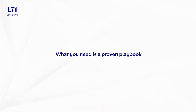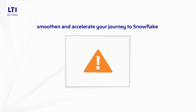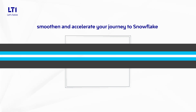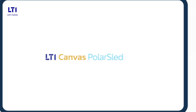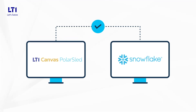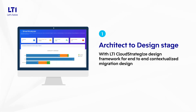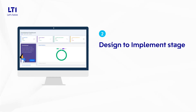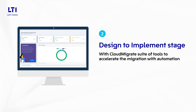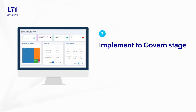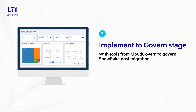What you need is a proven playbook to de-risk, smoothen, and accelerate your journey to Snowflake. LTI Polar Sled can help you launch your Snowflake modernization initiative. It's a three-stage plan: the Architect to Design stage with LTI Cloud Strategize design framework for end-to-end contextualized migration design; the Design to Implement stage with Cloud Migrate suite of tools to accelerate migration with automation; and the Implement to Govern stage with tools from Cloud Govern to govern Snowflake post-migration.